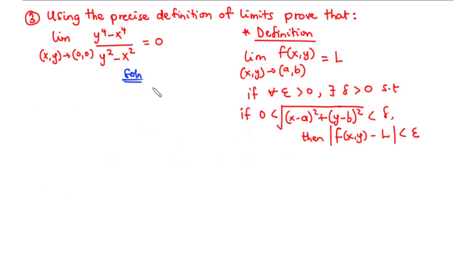In the previous lesson, we got to understand that the limit of a function f(x, y) as (x, y) approaches (a, b) is equal to L if, for all epsilon greater than 0, there is a corresponding delta greater than 0 such that if 0 is less than the distance between the two points (x, y) and (a, b) is less than delta, then the absolute value of f(x, y) minus L is less than epsilon.